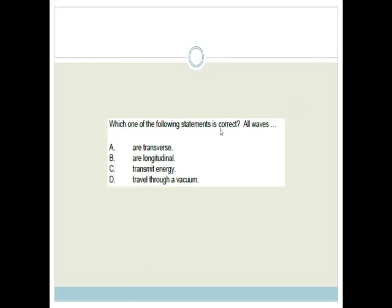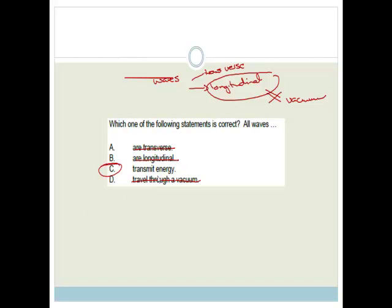Let's move on to the next question. Which one of the following statements is correct? All waves are transverse, longitudinal, transmit energy, or travel through a vacuum? So what do we know about waves? We know that waves are either transverse, or they are longitudinal. So therefore, not all waves are transverse, or longitudinal. And what's special about longitudinal waves is they cannot travel through a vacuum. That's why there is no sound in outer space. Therefore, not all of them travel through a vacuum. So therefore, the correct answer is yes, all waves transmit energy.